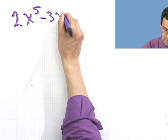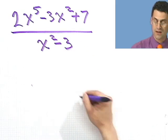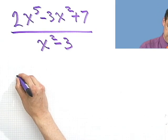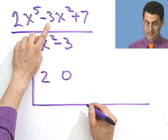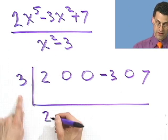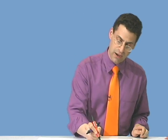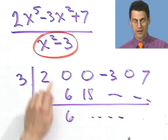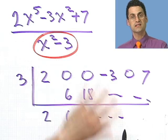One last thing to consider. What about 2x to the fifth minus 3x squared plus 7, all divided by x squared minus 3? You might think to use synthetic division — switch to 3, write down the coefficients 2, 0, 0, minus 3, 0, 7, and start working. But the answer is absolutely not. Notice that the divisor is not of the form x plus a number or x minus a number — it's x squared minus 3.